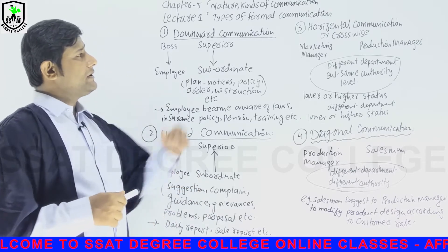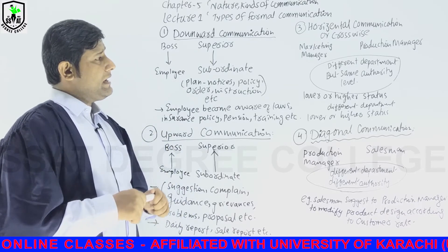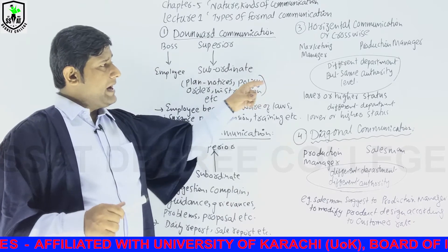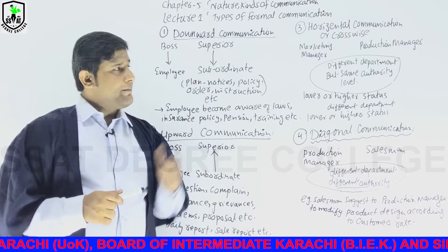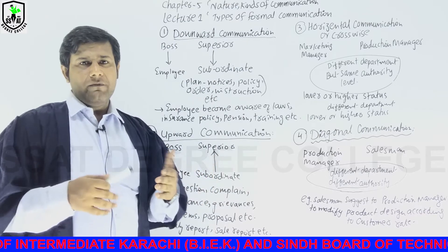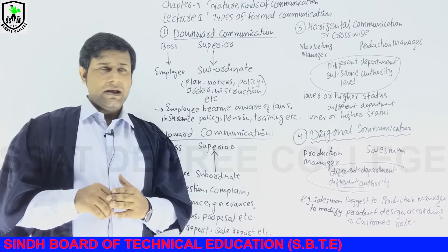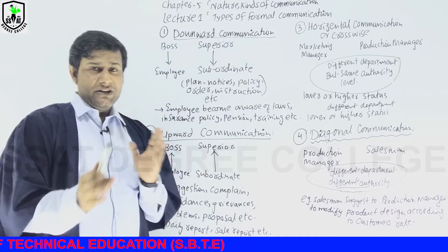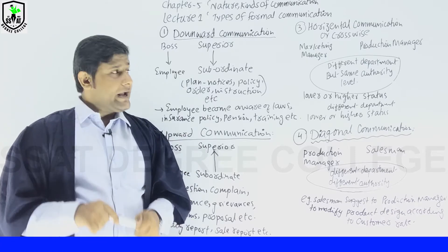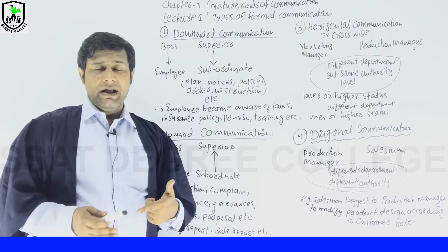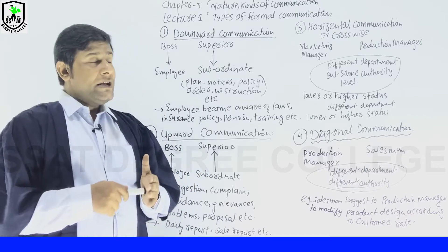Number three is horizontal or crosswise communication. Horizontal communication involves people of different departments but the same authority level. For example, the marketing manager of one department and the production manager of another department — they have the same authority but different departments. When they communicate with one another regarding policies, memos, sale letters, or reports, that is horizontal communication.